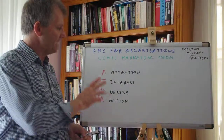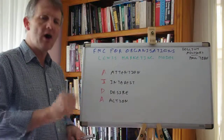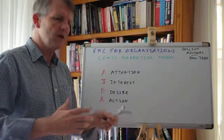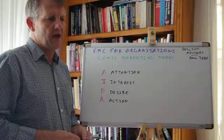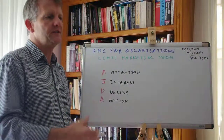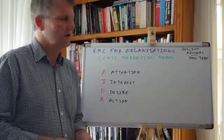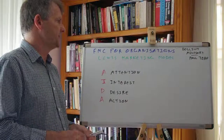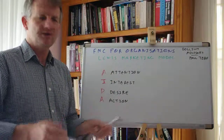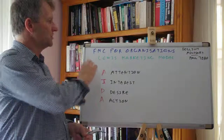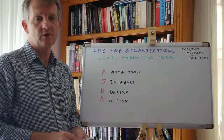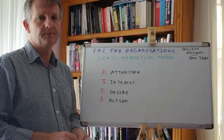So, the Lewis Marketing Model: A for Attention, I for Interest, D for Desire, and A for Action. Consider these things as you go about your products and services. Consider these things going forward for your organization. This has been Paul Terrow of Dellium Advisory with just another short take on frameworks, models and concepts for organizations. Thank you.